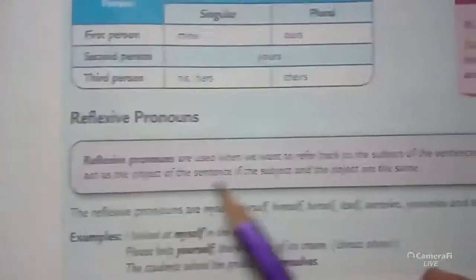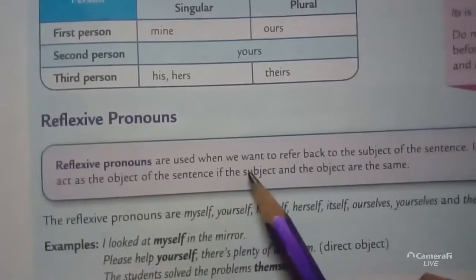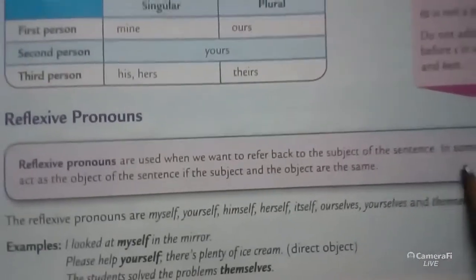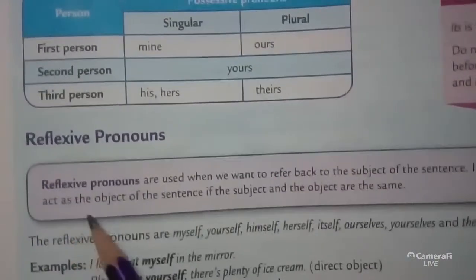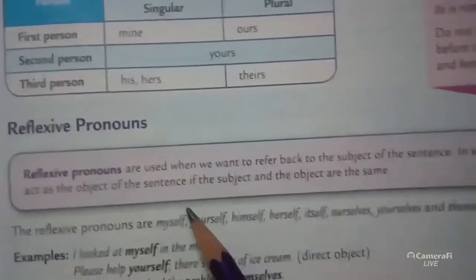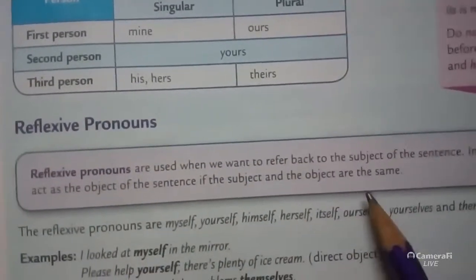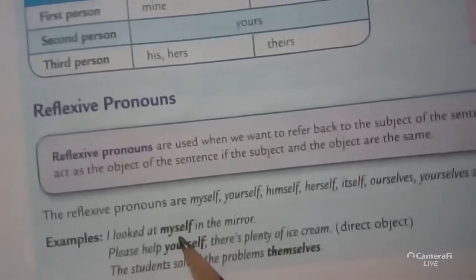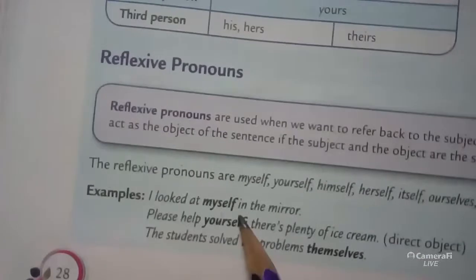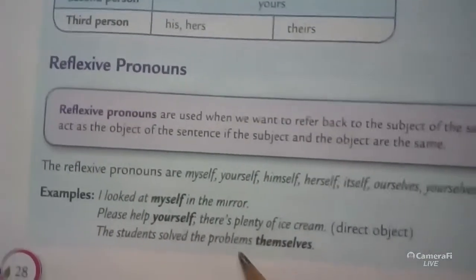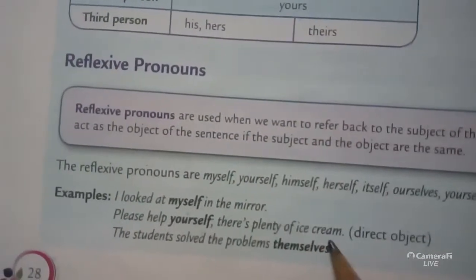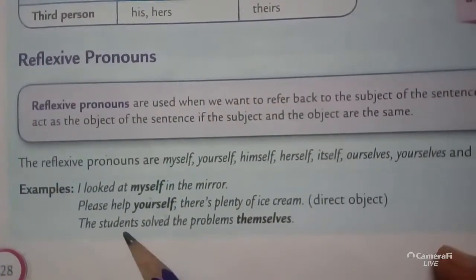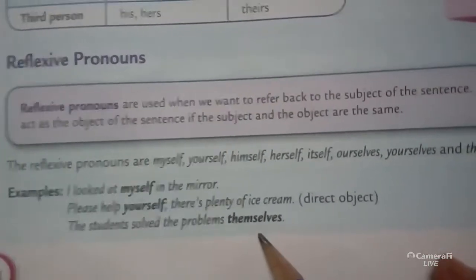Now reflexive pronouns. Reflexive pronouns are used when we want to refer back to the subject of the sentence. In some cases they can act as the object of the sentence when the subject and the object are the same. Examples: 'I looked at myself in the mirror.' 'Please help yourself, there is plenty of ice cream.' 'The students solved the problems themselves.'